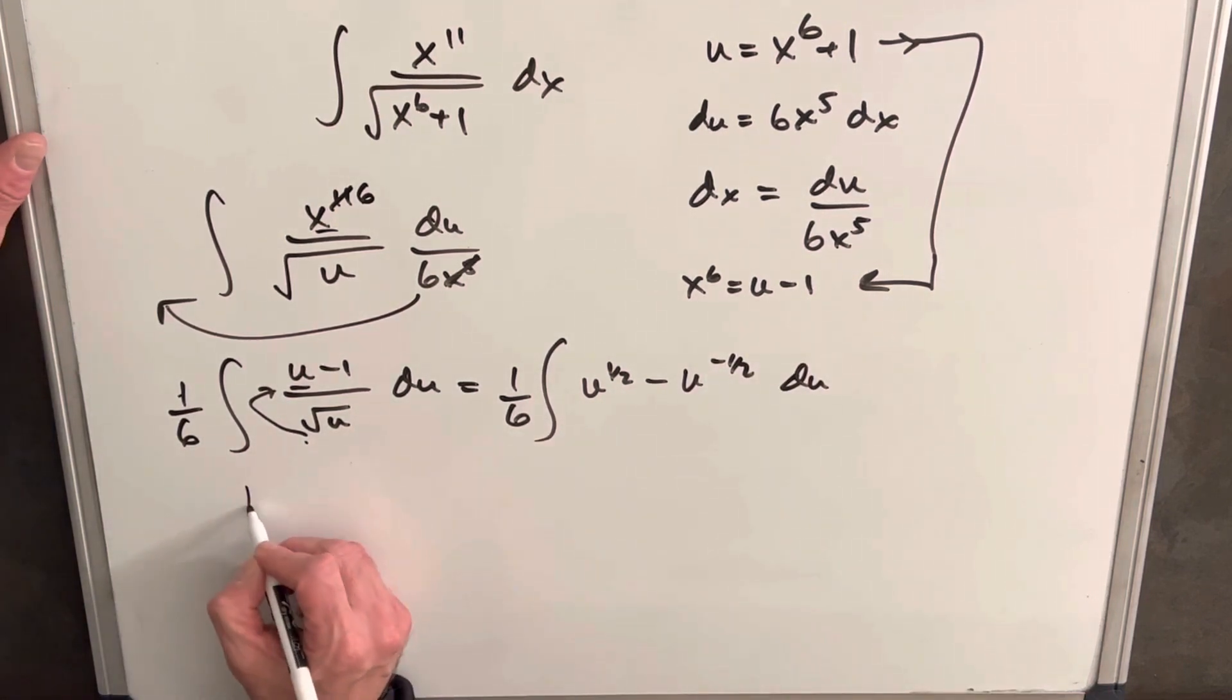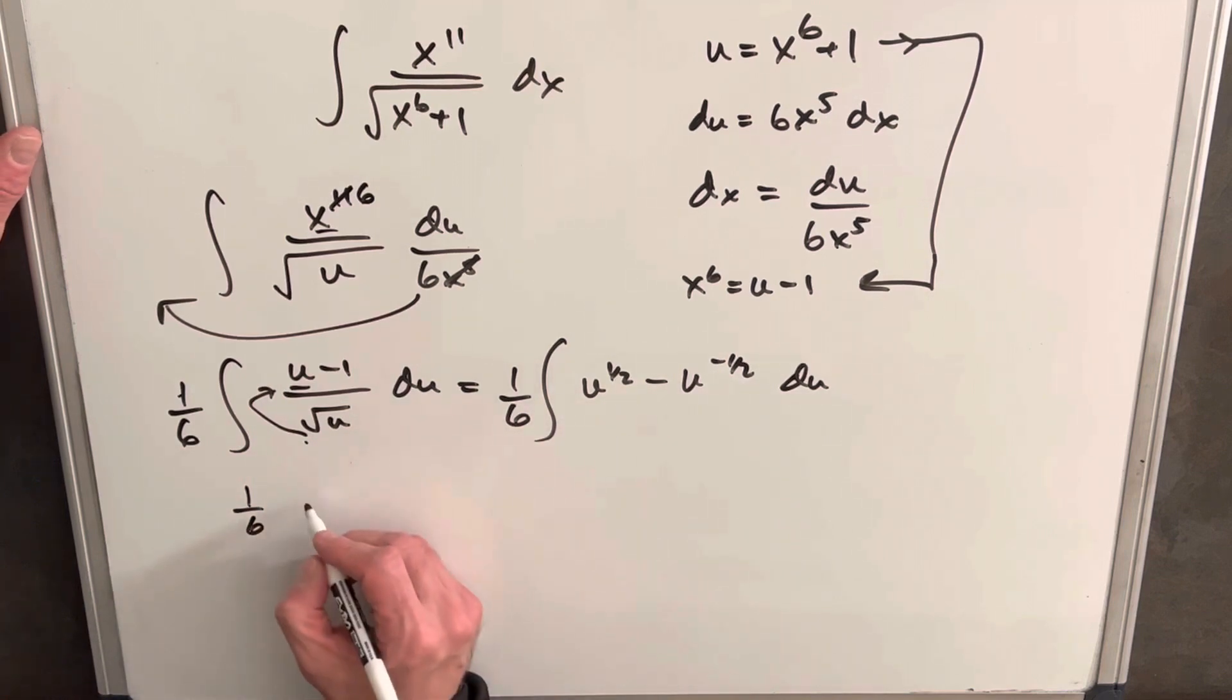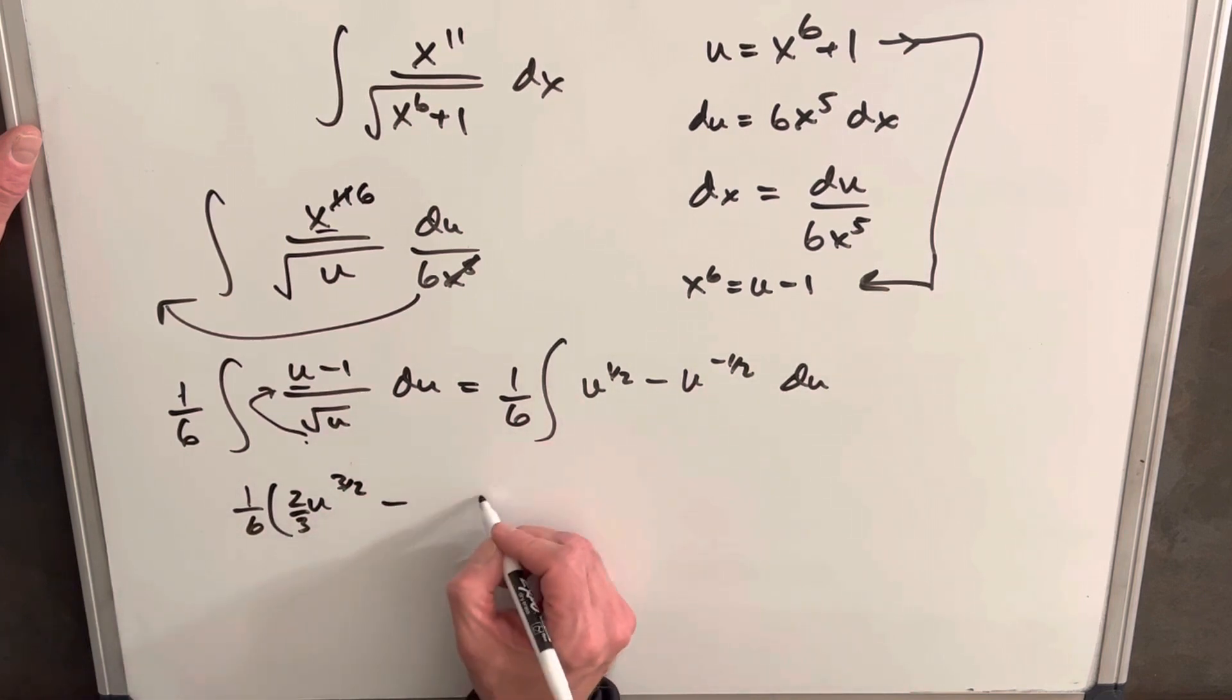Then we can integrate. We're going to end up with 1 6th u to the 3 halves. Bring a 2 3rds up front. And then here we're going to have minus u to the 1 half. And then we'll have a 2 here.